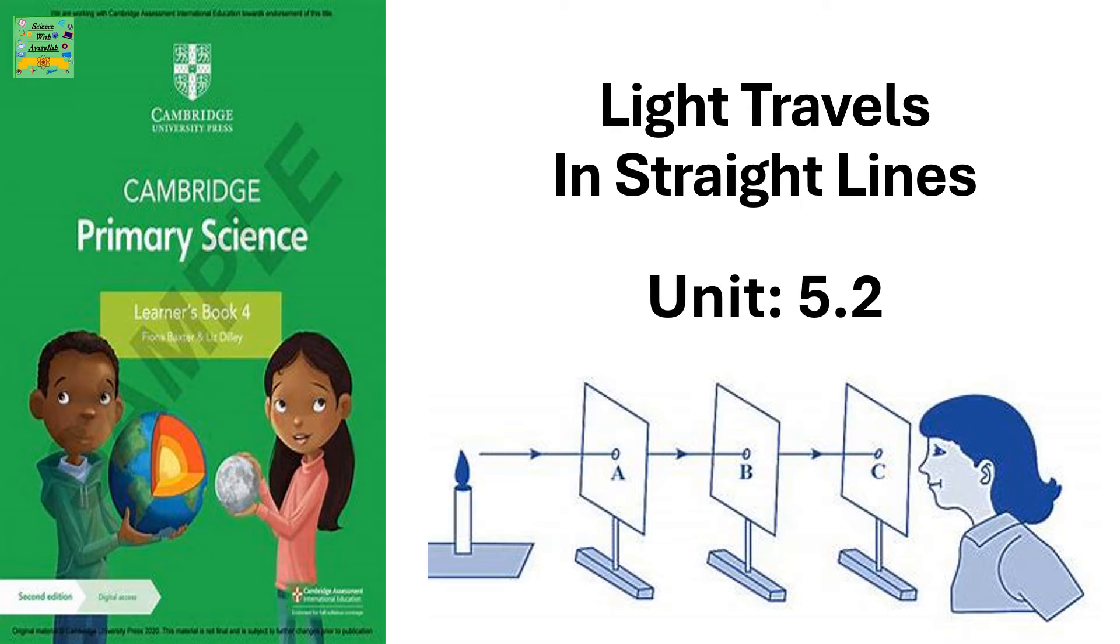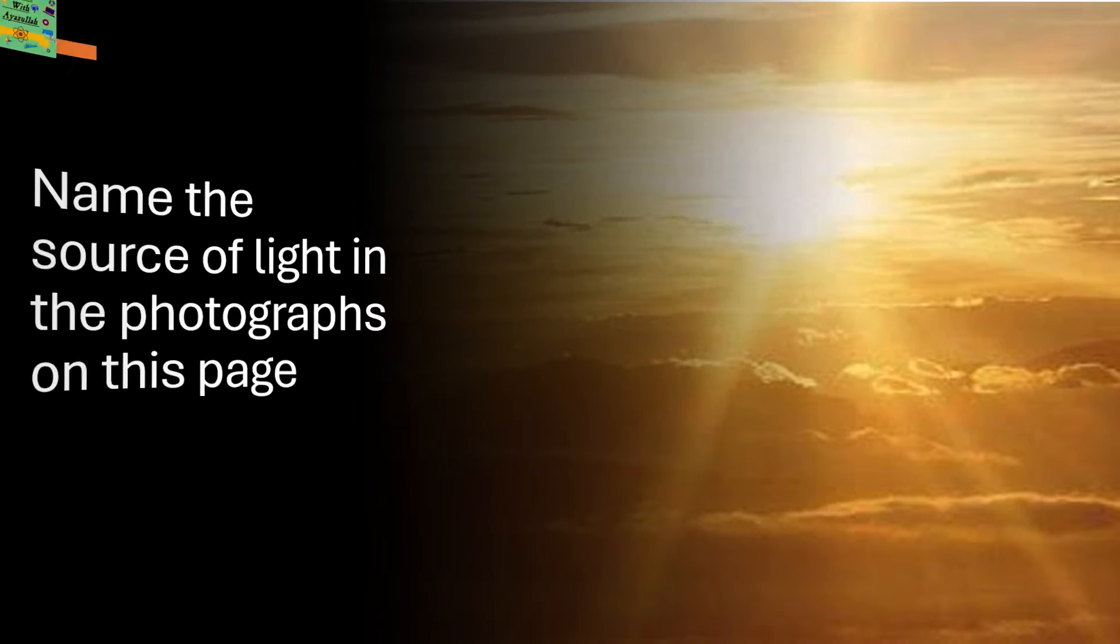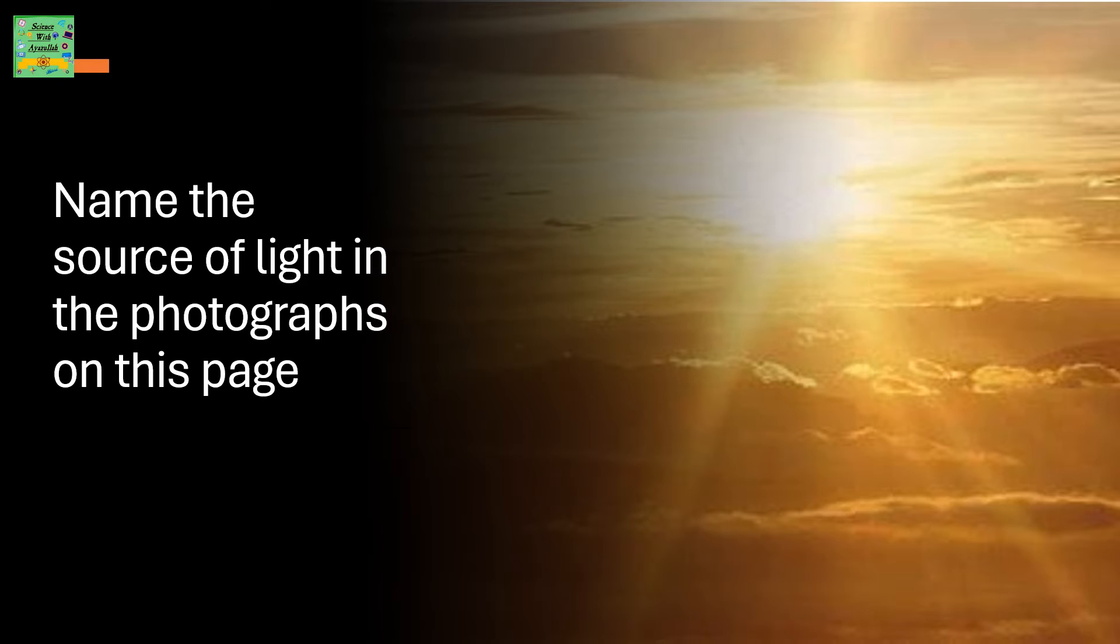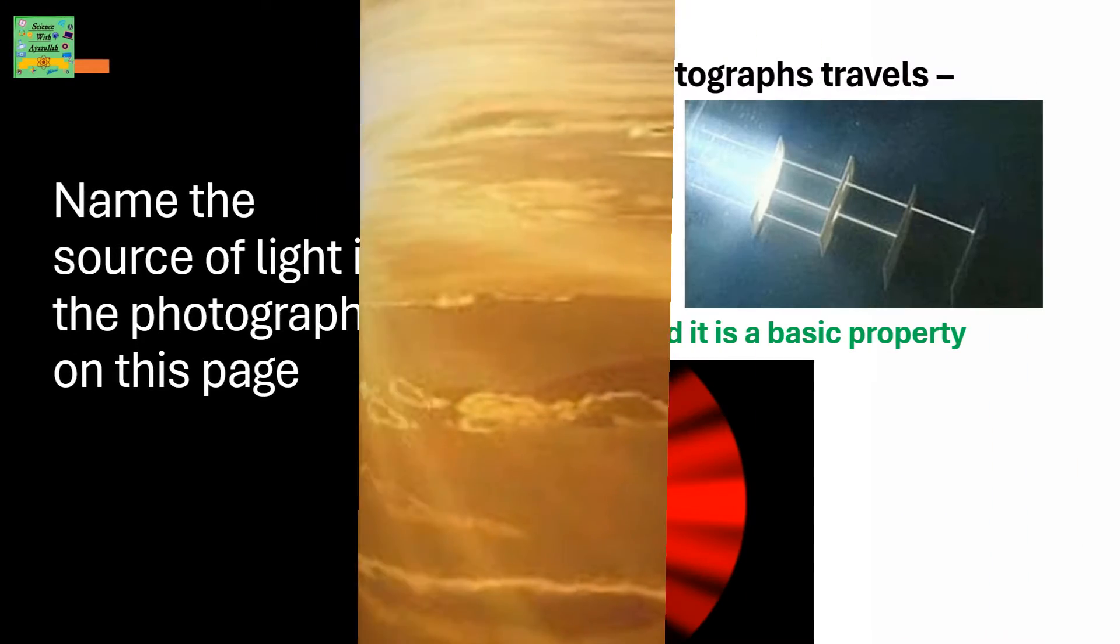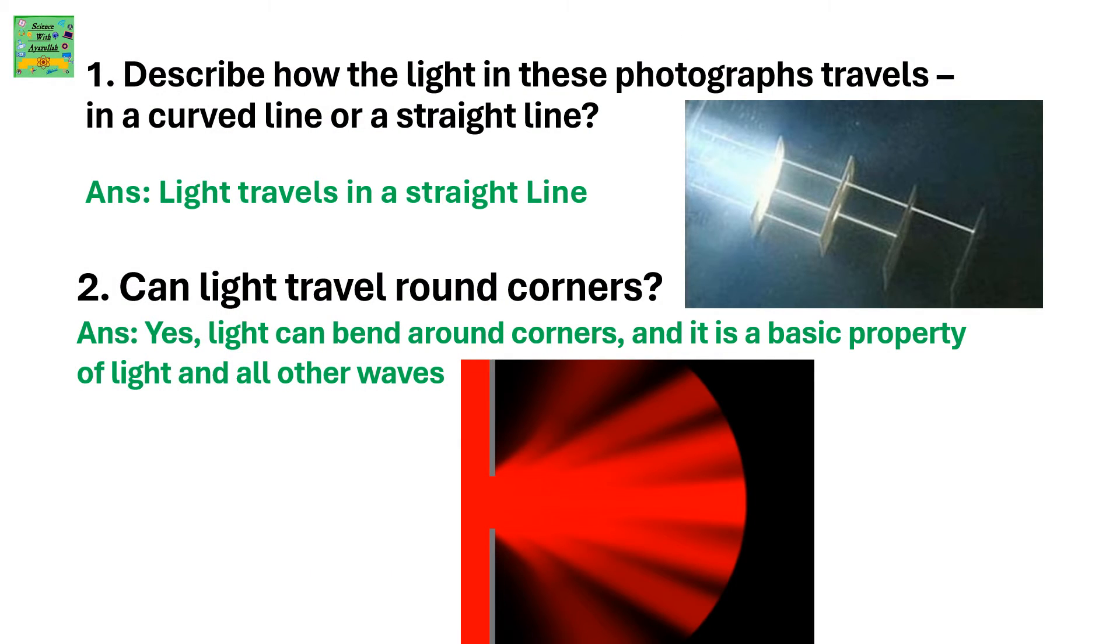Light Travels in Straight Lines. Name the source of light in the photographs on this page and the next page. Describe how the light in these photographs travels - in a curved line or a straight line. Light travels in a straight line.